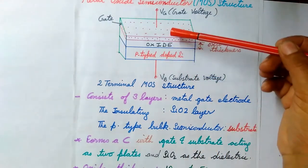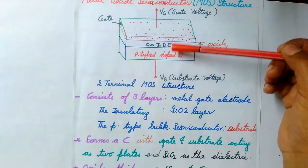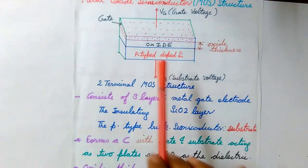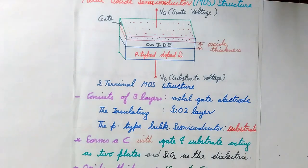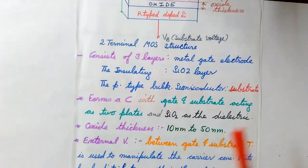So these two layers act as the two plates of a capacitor with this SiO2 or the oxide acting as a dielectric between them. The oxide thickness of this SiO2 is nearly 10 nm to 50 nm.